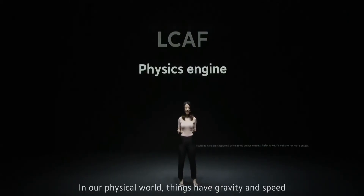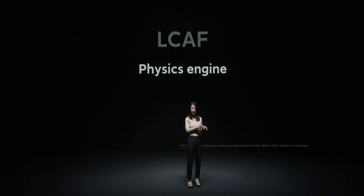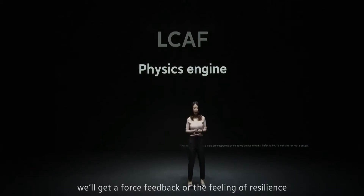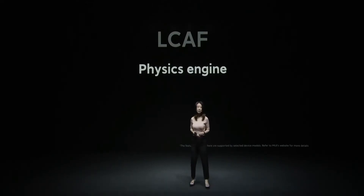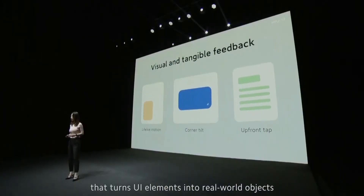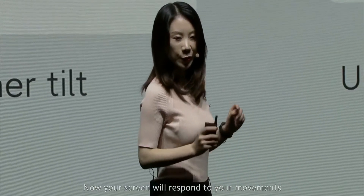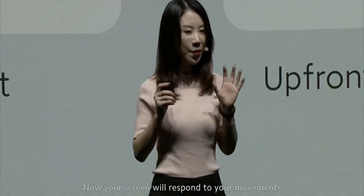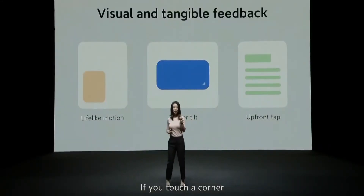Every frame of the corner is perfect. Then there's the physical engine. In our physical world, things have gravity and speed. If we touch something, we get force feedback or a feel of resilience. We wanted that to happen on your phone screen too, so we introduced a physics engine that turns UI elements into real-world objects.